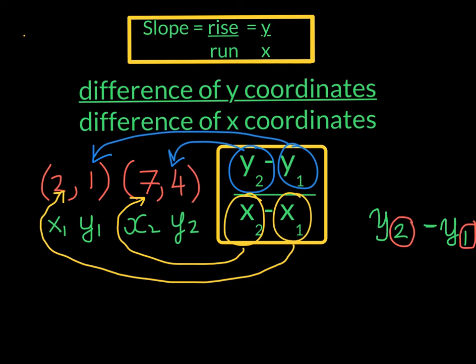So we will take our y2, which is 4, and subtract from it our y1, which in this case is 1, and we will take our x2, which in this case is 7, and subtract from it our x1, which in this case happens to be 2. 4 take away 1 is going to give me 3, and 7 take away 2 is going to give me 5. We're going to get 3 fifths, which is the slope we got from the first drawing.